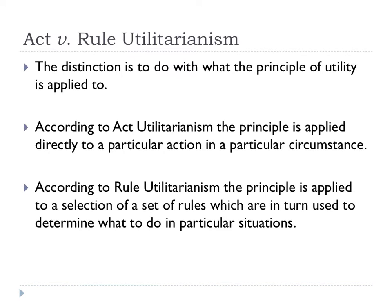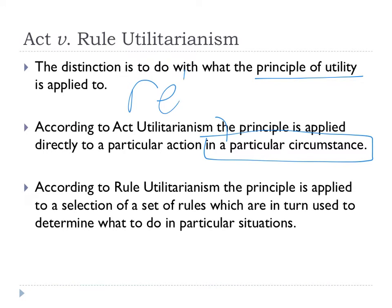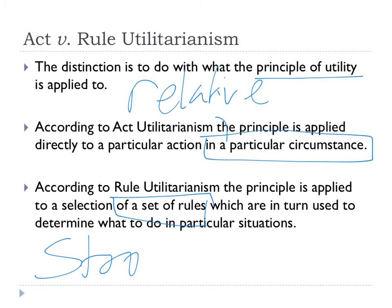It's quite tricky and subtle to explain what the main difference is, so focus on this idea: it's what the principle of utility is applied to. The principle of utility is the greatest happiness for the greatest number. With act utilitarianism, it's the greatest happiness for the greatest number in every individual circumstance — so you might argue it's extremely relative to the situation. But with rule utilitarianism, we use that principle to make a set of rules that we then have to follow in many situations.